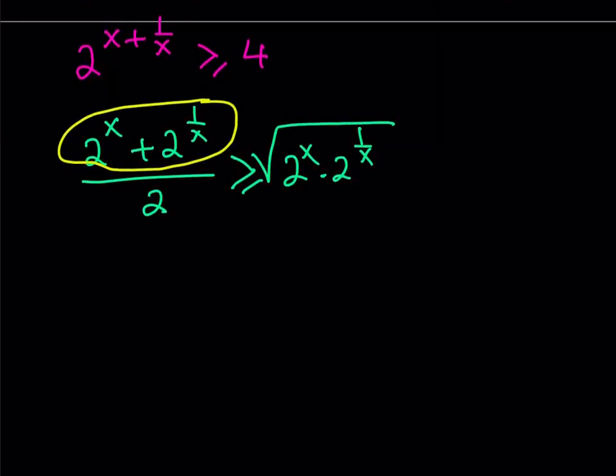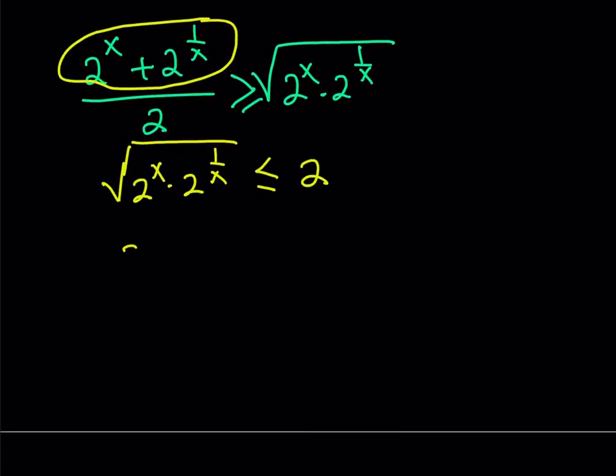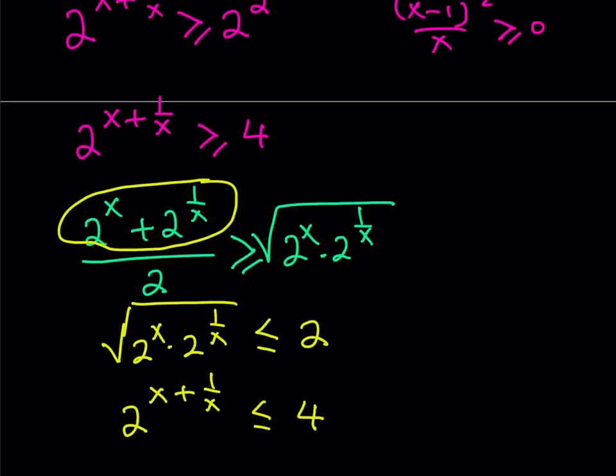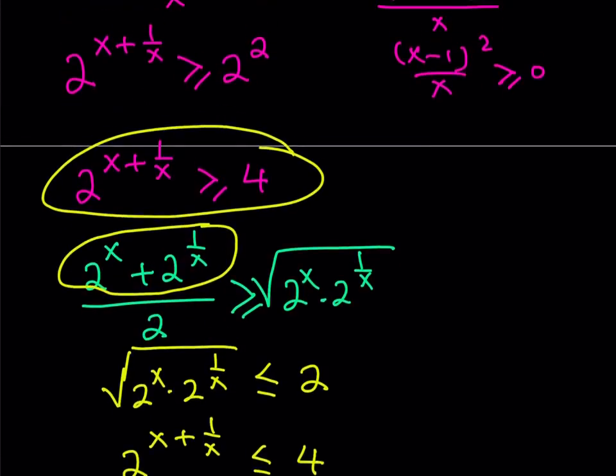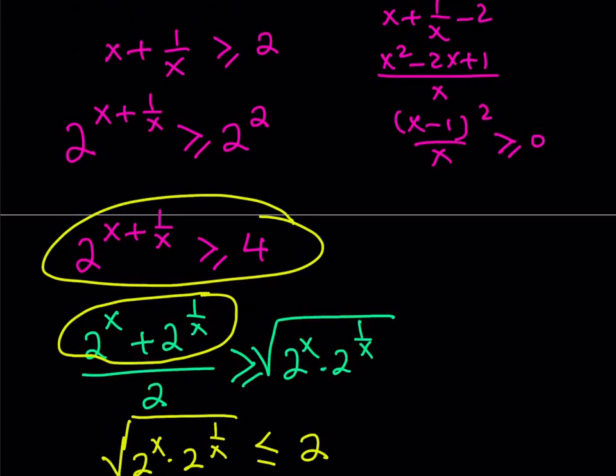4 divided by 2 is equal to 2. So we basically have 2 on the left-hand side. Let's flip sides. This gives us the square root of 2 to the power of x times 2 to the power of 1 over x is less than or equal to 2. If you square both sides and add the exponents, because that's what you're going to get from there, you'll get 2 to the power of x plus 1 over x is less than or equal to 4. But notice that in this expression, we basically got that that expression is supposed to be greater than or equal to 4 if you start with the assumption that x plus 1 over x is greater than or equal to 2, which is true for positive x's.